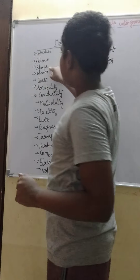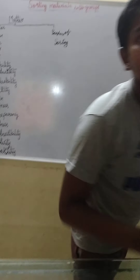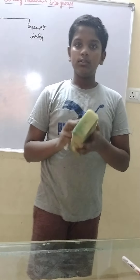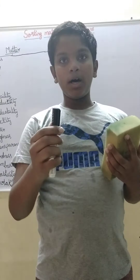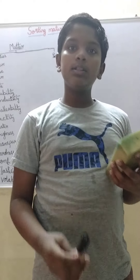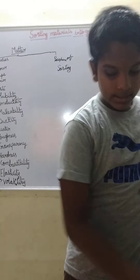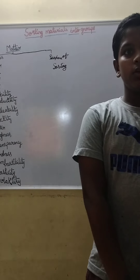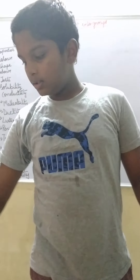Everything has a specific shape. Take the example of my duster and a marker. The duster has a cuboid shape and the marker has a cylindrical shape. I can sort them — cylindrical shapes on one side and cuboid shapes on another side.